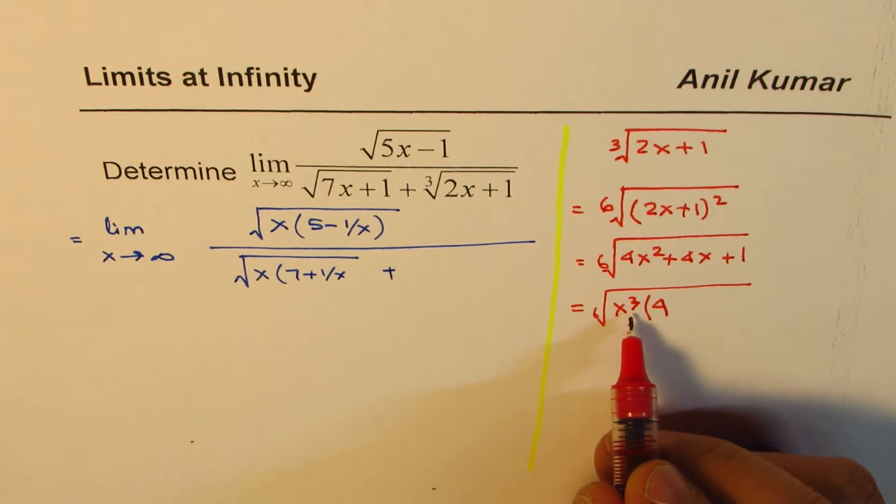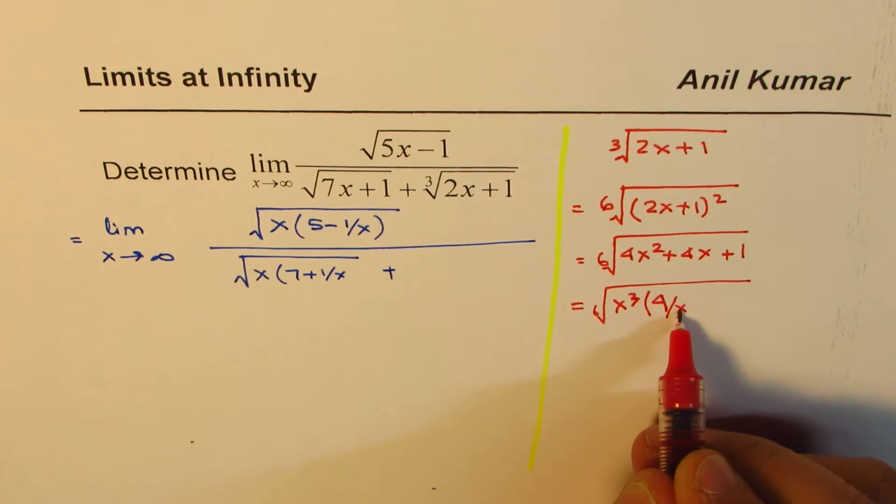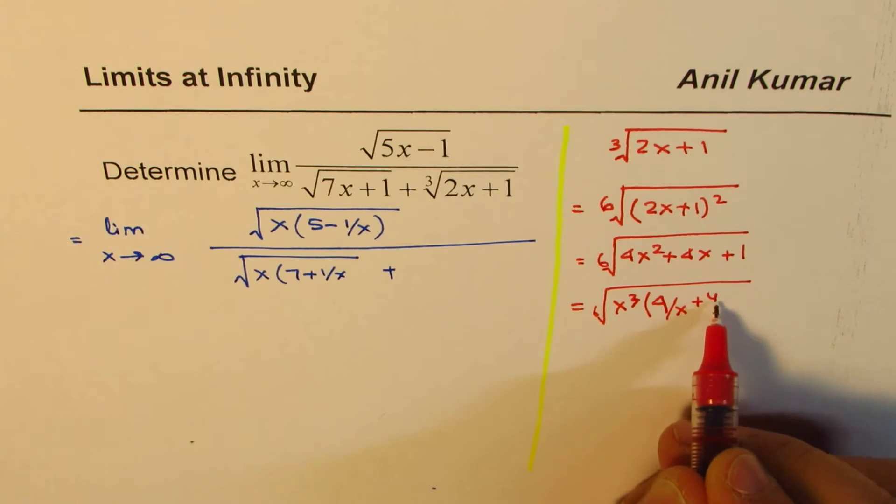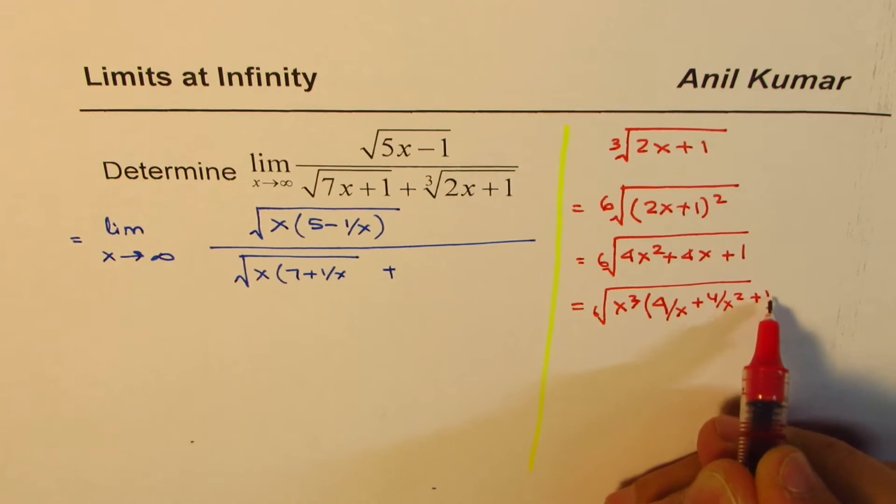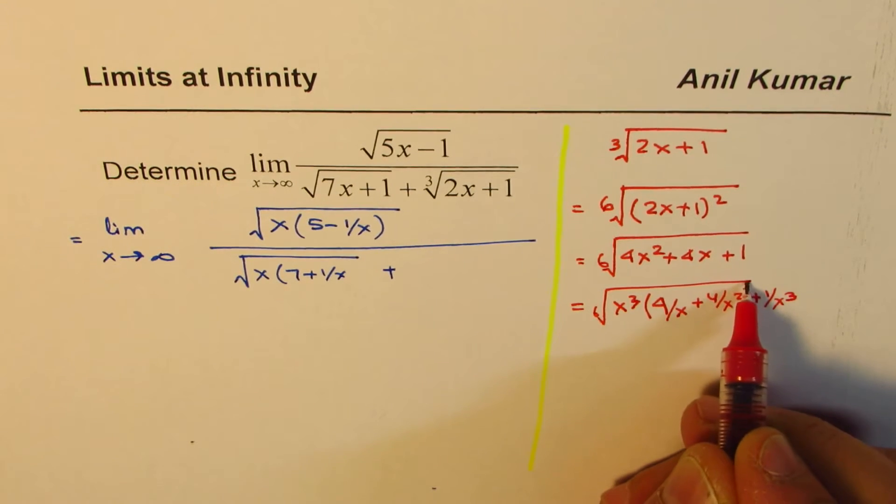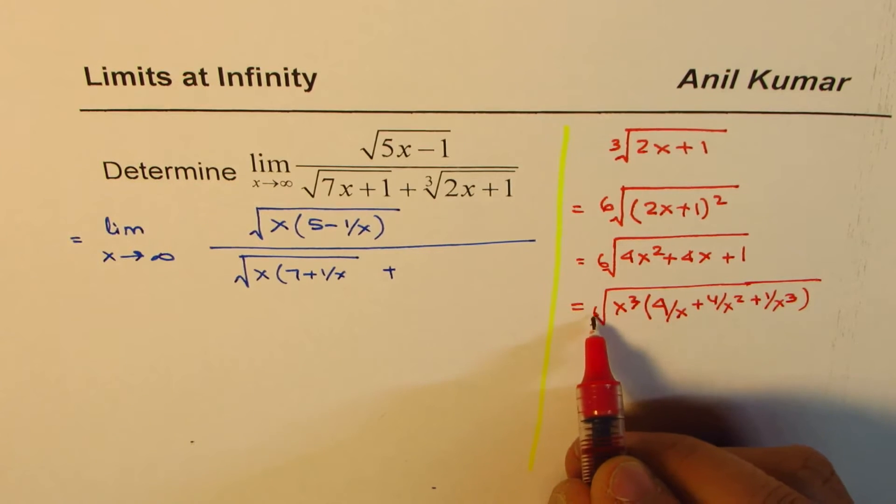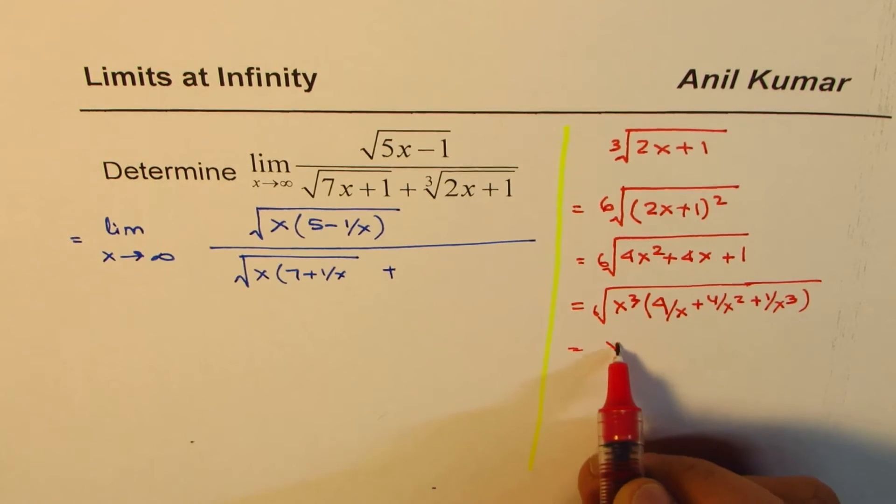So if I take x cube common, I know it is not there, but then we will get 4 over x, plus 4 over x square plus 1 over x cube. Do you see that? So if I take x cube common, this is the sixth root, then outside the root, I get x to the power of 3 over 6, which is square root.